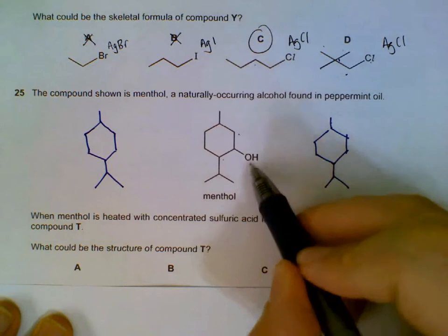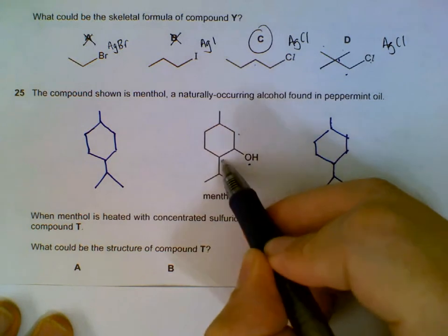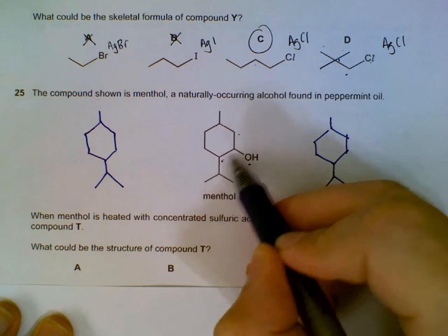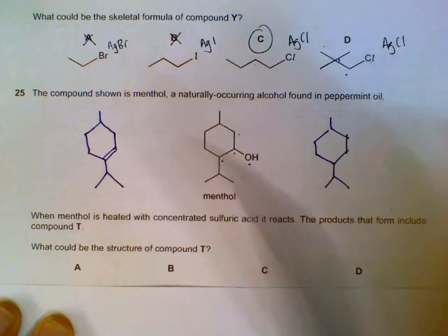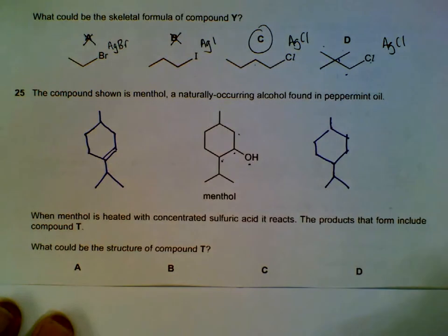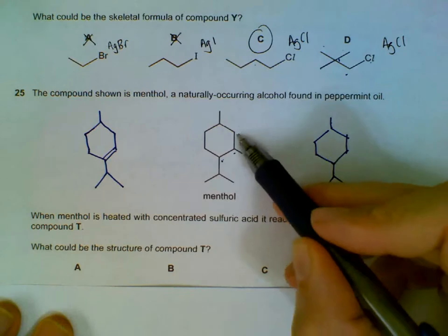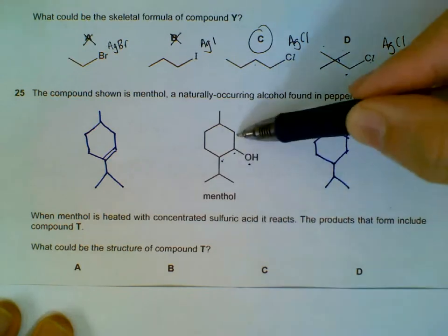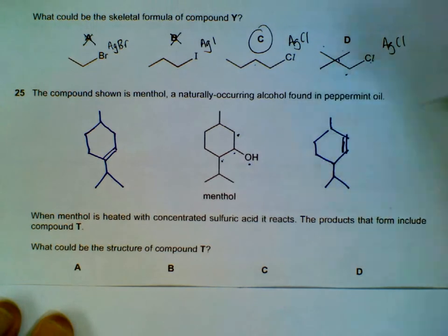If you were to remove OH and then remove the H from here, the double bond will be formed between these two carbons and we will get this structure. If we were to remove the OH and remove the H from this carbon, we will get this structure.